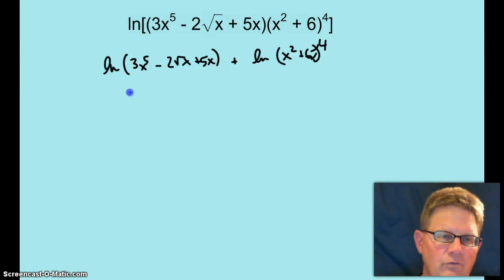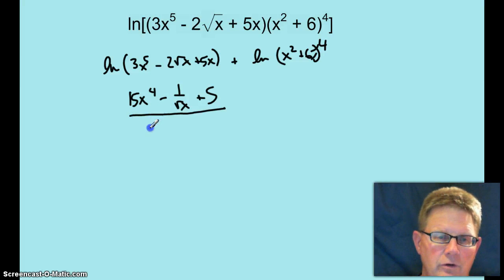So let's see here, 15x to the 4th power minus, that's x to the 1 half times 2 is 1, that would be x to the negative half, so 1 over root x plus 5, all over 3x to the 5th minus 2 root x plus 5x plus,